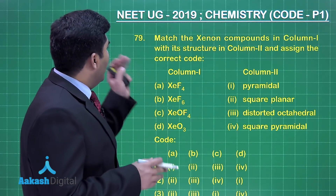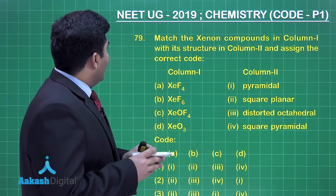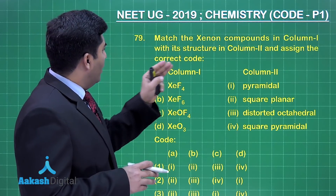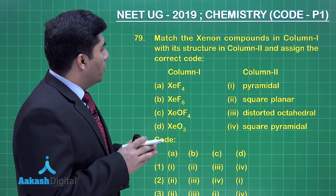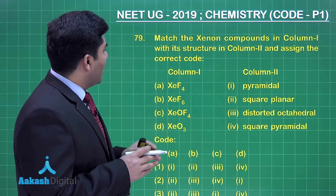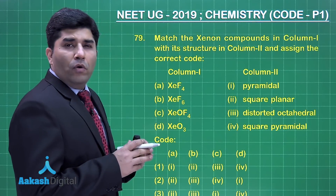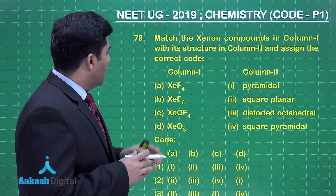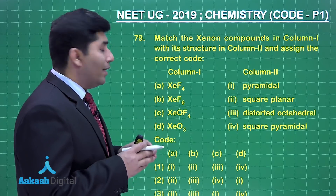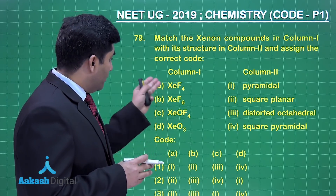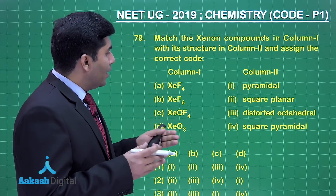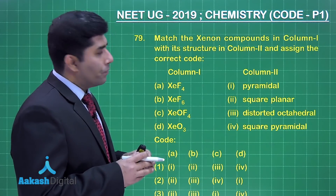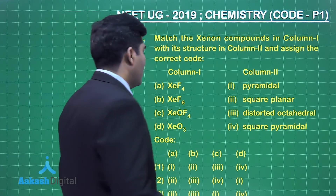In this question, we need to match the xenon compounds in column 1 with their structures in column 2 and assign the correct code. Two columns are given: column 1 has some compounds and column 2 has their shapes. We have to match them.